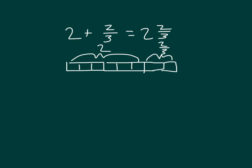2 plus those 2 thirds gives us a sum that is a mixed number. Say the number sentence that adds the whole number to the fraction. 2 plus 2 thirds equals 2 and 2 thirds.